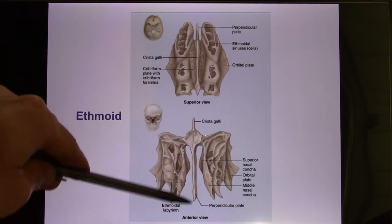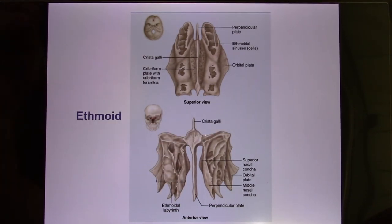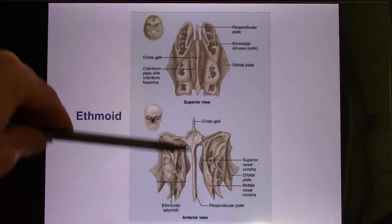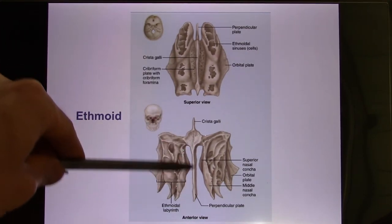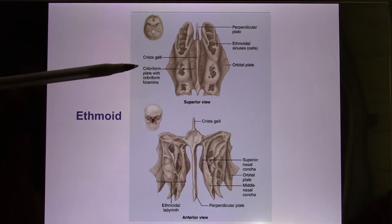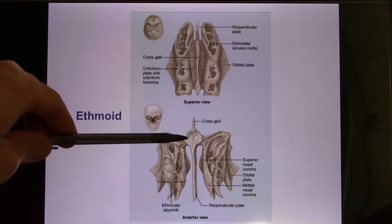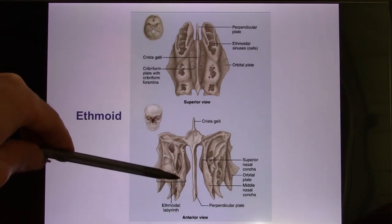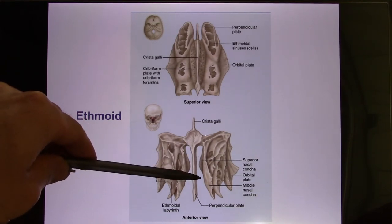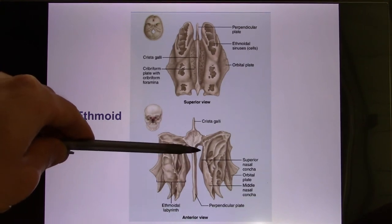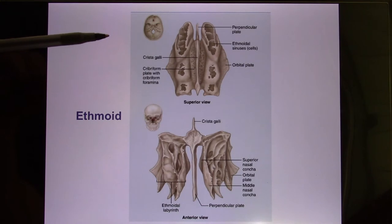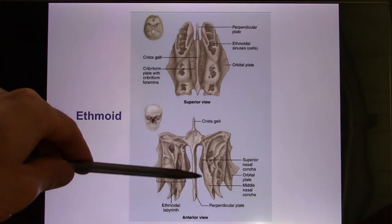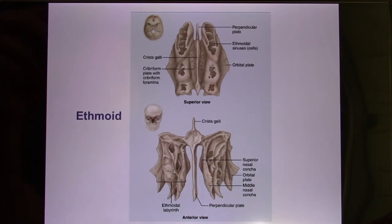This structure is called the perpendicular plate, and this is the nasal cavity. The nasal cavity needs to be separated into two sides. The upper part of the nasal septum is the perpendicular plate of the ethmoid bone. The folds in the nasal cavity are called conchae — you have the superior nasal concha and middle nasal concha, which are part of the ethmoid bone. But the inferior nasal concha is actually a separate bone.